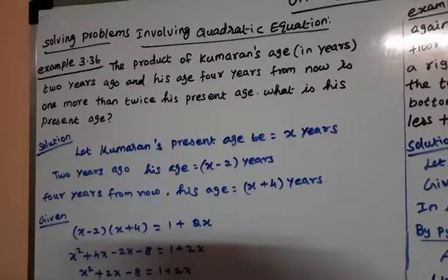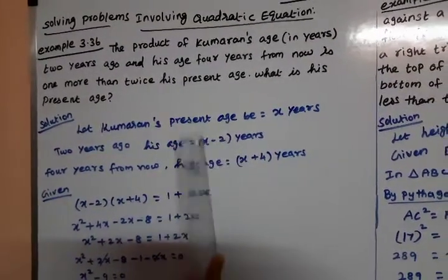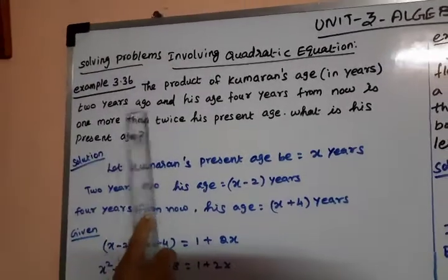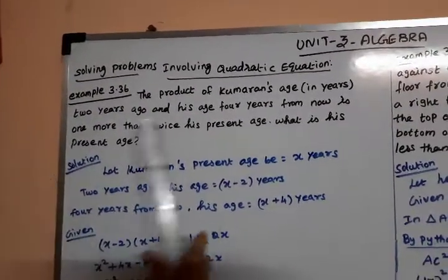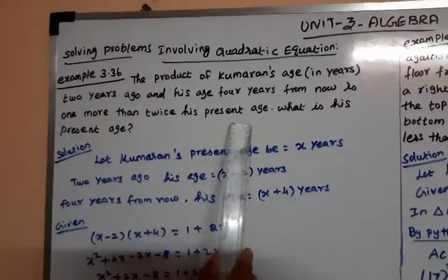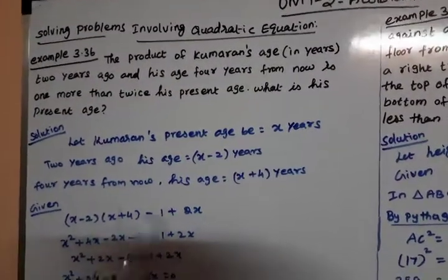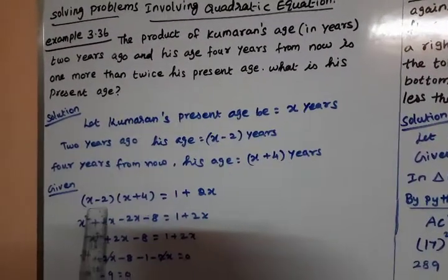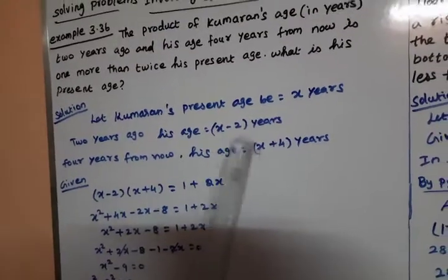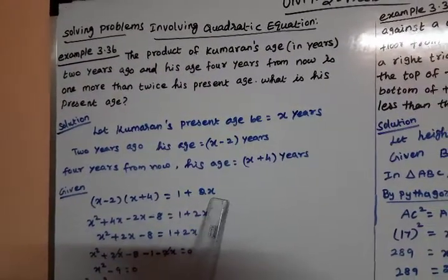So, the product of Kumaran's age two years ago and four years from now is (X minus 2) times (X plus 4). And one more than twice the present age is 2X plus 1. That gives us 1 plus 2X on the right-hand side.